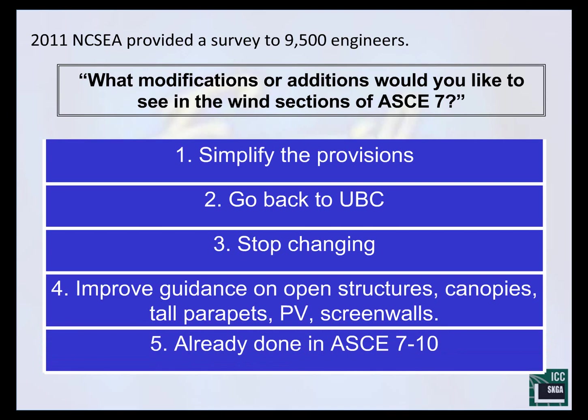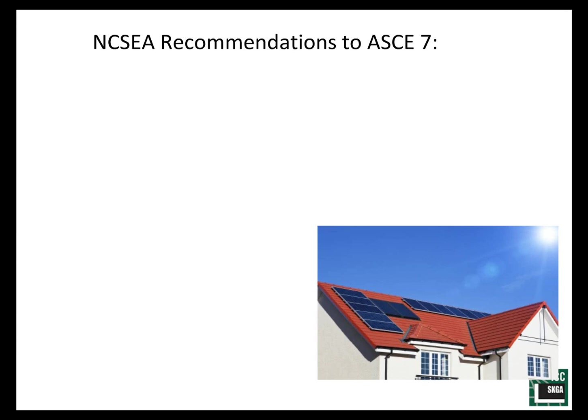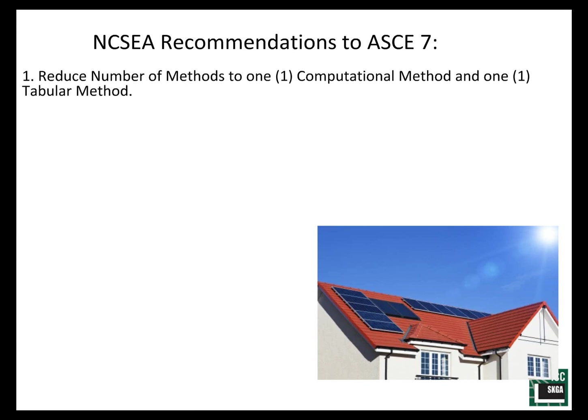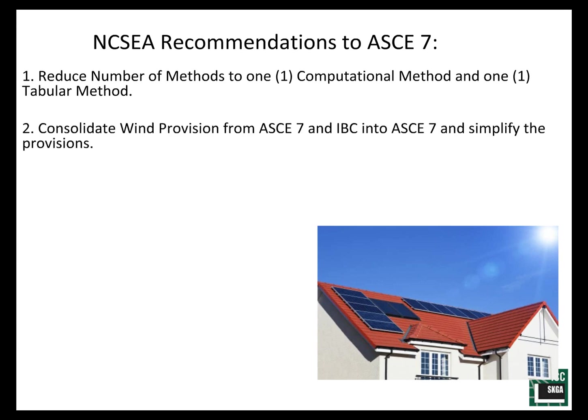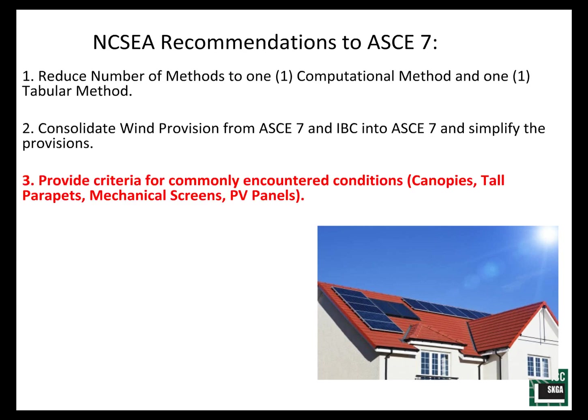For completeness, a handful of people actually liked the ASCE 7-10 provisions and thought some things had been addressed there. As a result of that survey, NCSEA made recommendations to the ASCE 7 wind committee — at the time the ASCE 7-16 wind committee. The first recommendation was to reduce the number of methods down to one computational and one tabular method. That was not successful in ASCE 7-16; it's being revisited in 7-22, so stay tuned. The second was to consolidate wind provisions in ASCE 7 and IBC and further simplify them. The third recommendation — which we focus on today — was to provide criteria for commonly encountered conditions like canopies, tall parapets, mechanical screens, and PV panels. Some of these made it into ASCE 7-16, and some are making their way into ASCE 7-22.